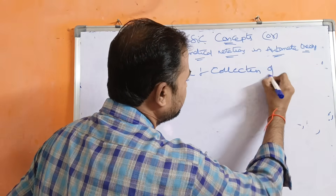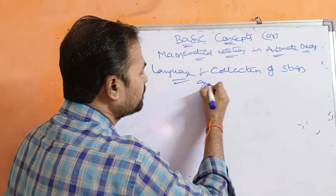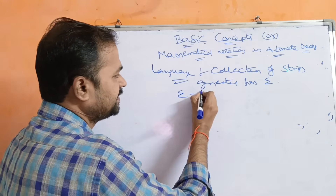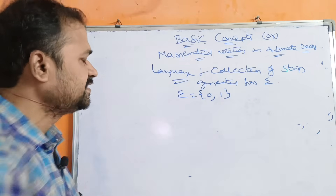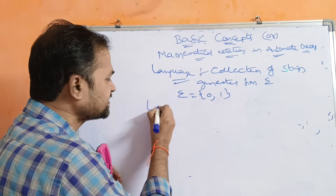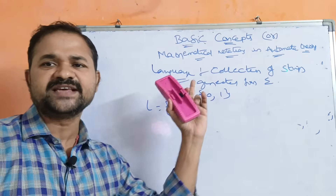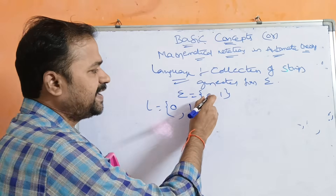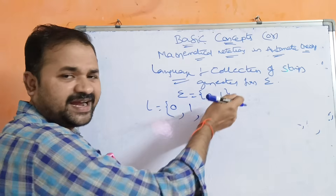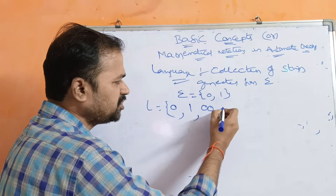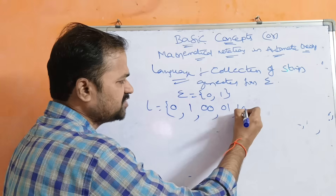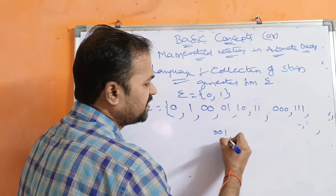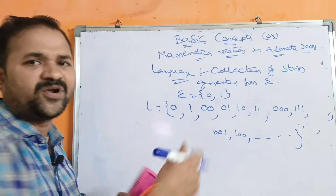A language is a finite set of strings generated from the alphabet sigma. For example, if sigma = {0, 1}, then the language L can include strings of one symbol: 0, 1; two symbols: 00, 01, 10, 11; three symbols: 000, 001, 010, 100, 110, and so on — we can write any number of strings.